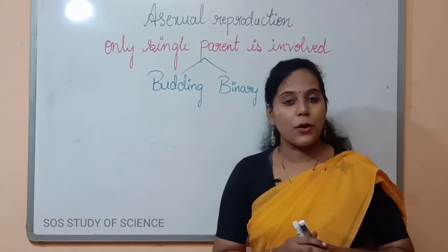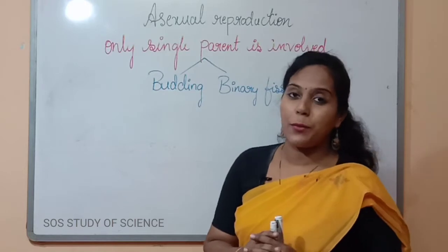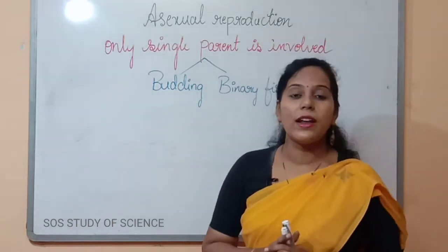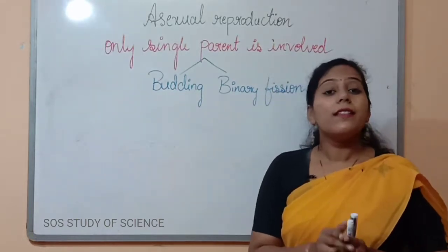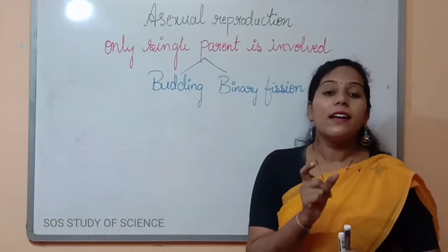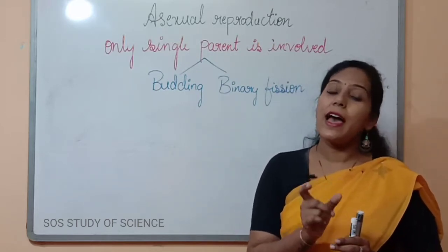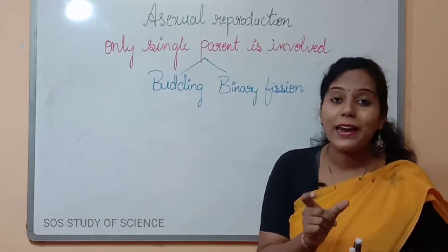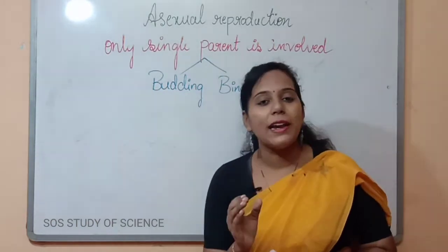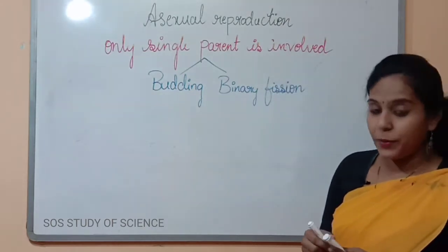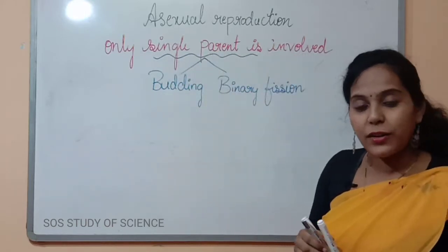In asexual mode of reproduction, we are going to mainly understand two things. What is asexual reproduction? Asexual reproduction is a mode of reproduction where there is only involvement of a single parent. Two parents are not necessary. Only with the help of a single parent, a new organism is produced. Such type of reproduction we call asexual mode of reproduction.